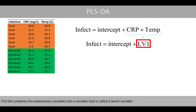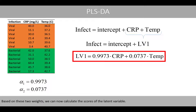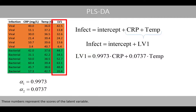PLS discriminant analysis combines the explanatory variables into a variable called a latent variable. These are the optimal values of the weights that generate maximum covariance between the dependent variable and the first latent variable. Watch the lecture about partial least squares regression to see how these weights are calculated. Based on these two weights, we can now calculate the scores of the latent variable. These numbers represent the scores of the latent variable.